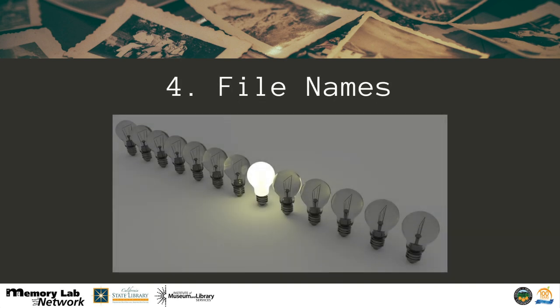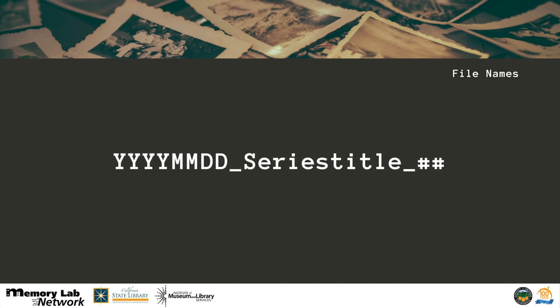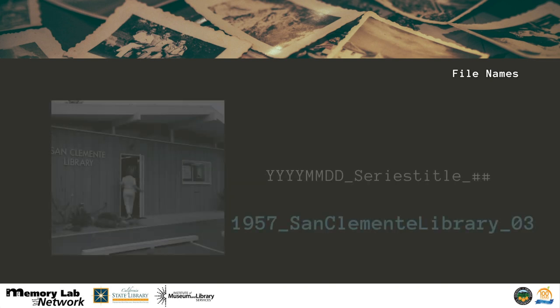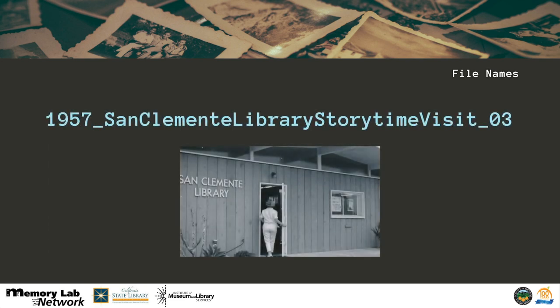Now that we know which format to use to save our photos, let's go over file names. This one is simple — there are two tips. Tip one: be obvious. Tip two: be consistent. File naming is important; you don't want to lose your files because you can't remember their name. Keep in mind that if you don't understand the name, you won't remember it. Our recommended file naming convention is: four-digit year, followed by two-digit month, followed by two-digit day, underscore, series title, underscore, number in the series. Include as much information as you can. For example, a photo of someone walking into a library would be named 1957 San Clemente Library, number three. If it was a storytime visit, you can write 1957 San Clemente Library Storytime Visit, number three. The file name should help paint a snapshot of when and what is going on.